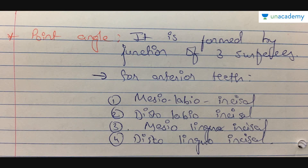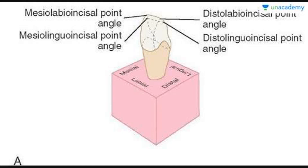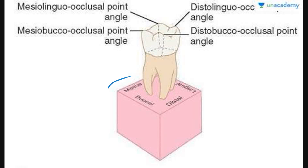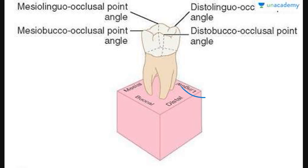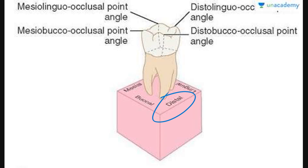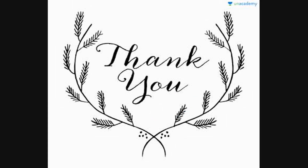Remember the names — you will easily understand all of this while doing the carving process. You will understand the line angles and point angles better then. First, be clear with the surfaces of the teeth: the labial surface, the lingual surface, the mesial and distal. Once you understand those, line angles and point angles will be easier. Buccal faces towards the cheek, lingual towards the tongue, mesial towards the midline, and distal away from the midline. First divide your tooth into these four surfaces, then go ahead with line angles and point angles. This completes the topic on line angles, point angles, landmarks, tooth numbering system, and surfaces and ridges of the tooth.